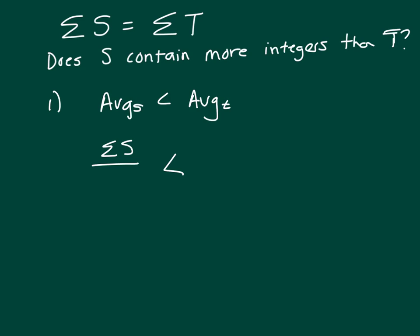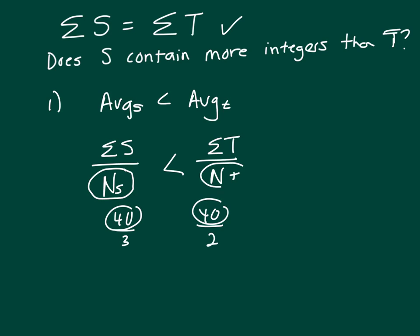We know that the numerators are the same because of this. But for the average of S to be less, that means for example, if you had 40 over 3 and 40 over 2, when the numerators are the same, the bigger the denominator, the smaller the number is. So, this would have to be the case where this number is larger than this number.